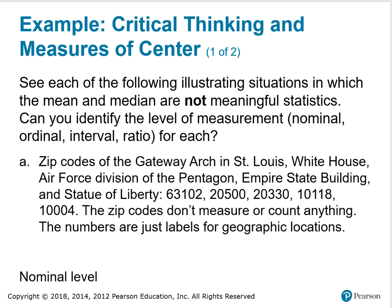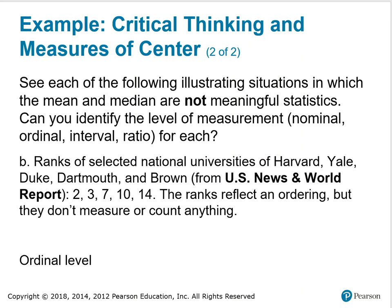The next example is ranks of selected national universities: Harvard, Yale, Duke, Dartmouth, and Brown from the US News and World Report. They are ranked at 2, 3, 7, 10, and 14 respectively. The ranks reflect an ordering, but they don't measure or count anything. Therefore, finding the mean and median for these particular ranks doesn't make any sense. And because order does—there is an indicated order that makes sense—it is at the ordinal level of measurement.